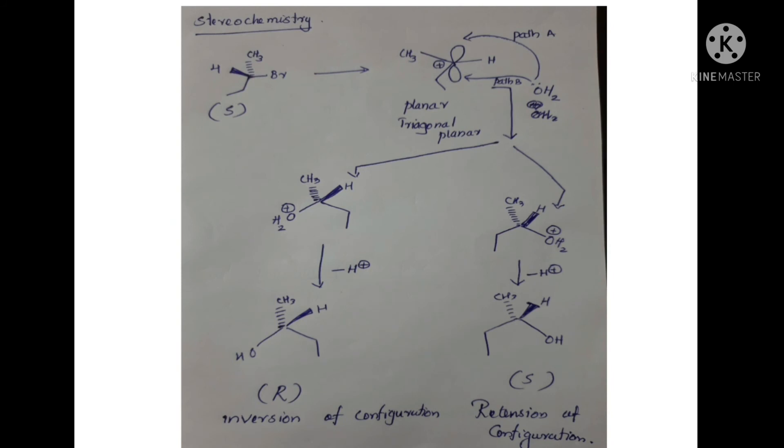In the case of stereochemistry, we have a P orbital perpendicular to the plane where the carbocation is formed.